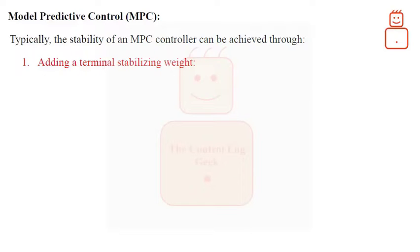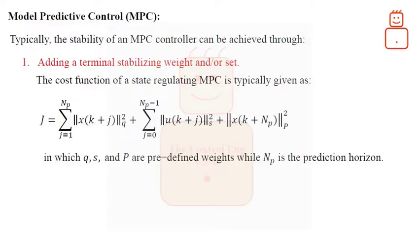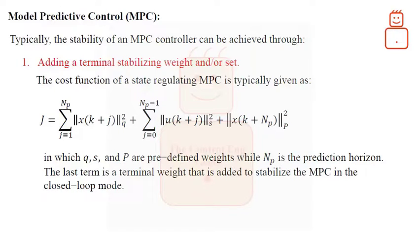The cost function of a state regulating MPC is typically given as: Here the cost J has two terms, the first term is trying to minimize the states, that is bringing them to zero. The second term, however, is attempting to minimize the control efforts. The matrices Q, S along with P are predefined weights while N_p is the prediction horizon. The last term is a terminal weight that is added to stabilize the MPC in the closed loop mode.